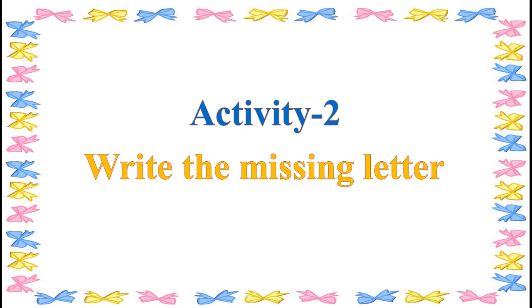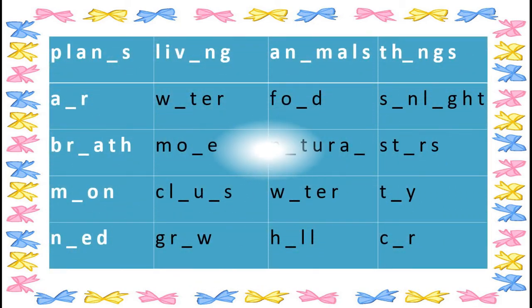Write the missing letter. Four have been done for you. Now look at the first word and fill the missing letter. Can you guess which letter we need to fill here to complete the word? Yes children, very good — T. Now it becomes plants.